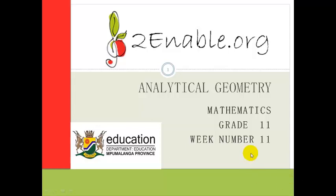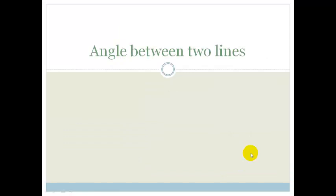Good day, grade 11s. Welcome to this next lesson on analytical geometry. In the last lesson, we looked at how to find the angle of inclination — the angle that a straight line makes with the horizontal. And today, we're going to use that knowledge to work out the angle between two lines. So let's get started straight away.